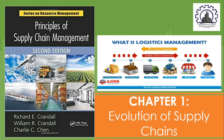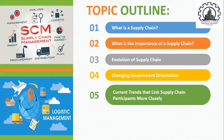In today's lesson, there are five key areas that we're going to be discussing. First, we have what is e-supply chain and its definition. Second, the importance of e-supply chain. Third, we will be tackling the evolution of supply chain and the changing government orientation. And finally, we have the current trends that link supply chain participants more closely.